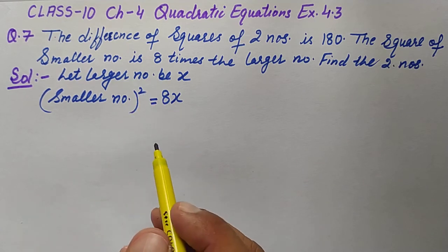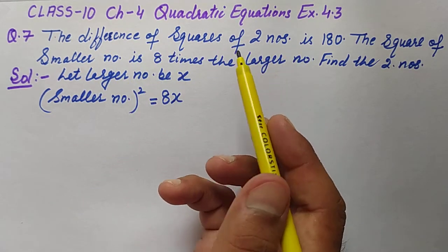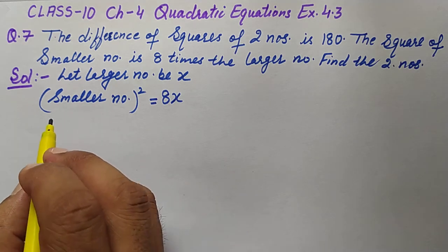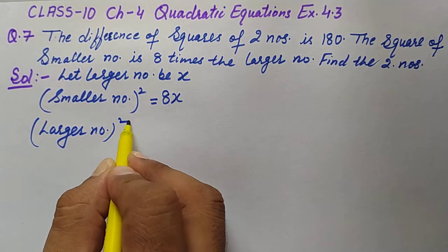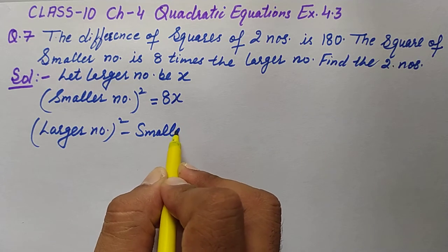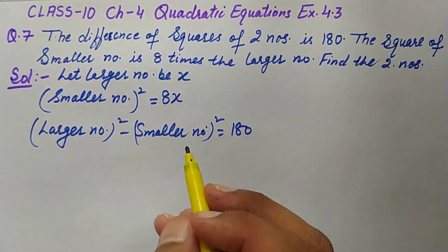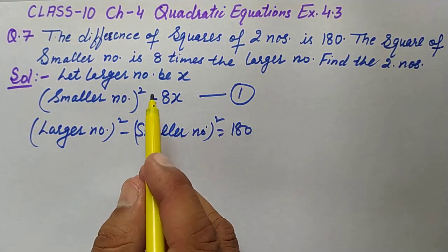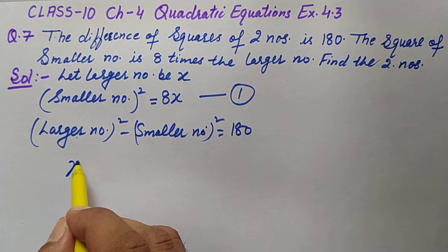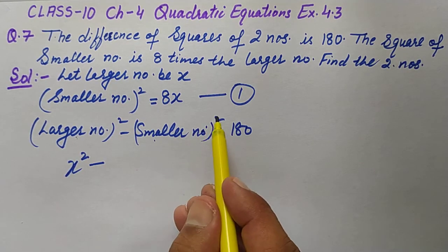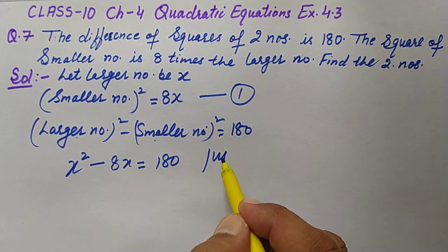Now for the first condition: the difference of squares of the two numbers is 180. That means larger number squared minus smaller number squared equals 180. From equation one, smaller number squared is 8x, and larger number is x.